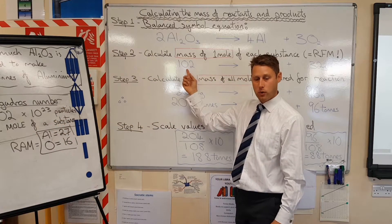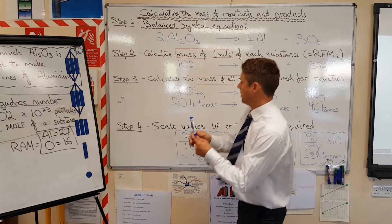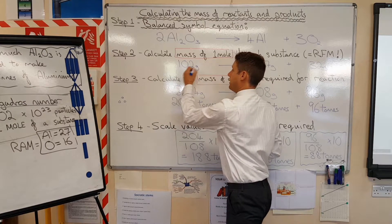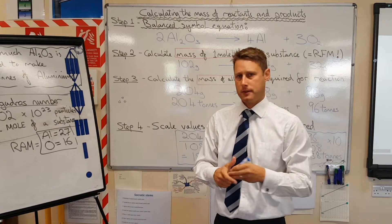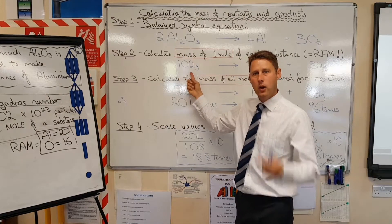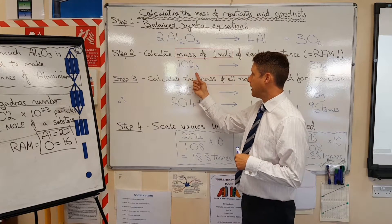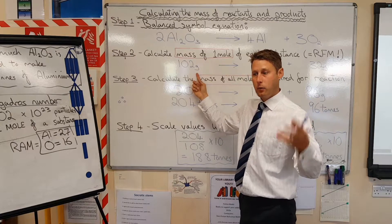So how do we know how much to use? Well, the relative formula mass of 102, all you do is pop a little g after it, and that stands for grams. If you have aluminum oxide and you weigh out 102 grams, 102 grams will be one mole.